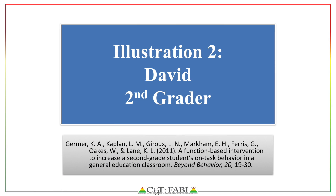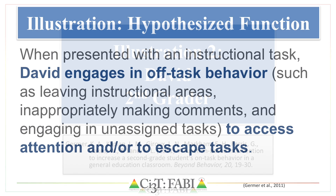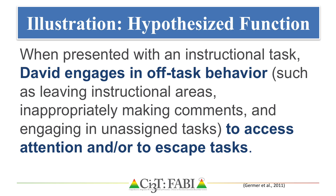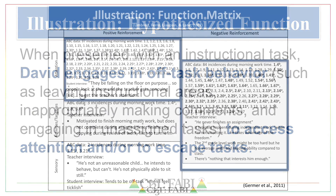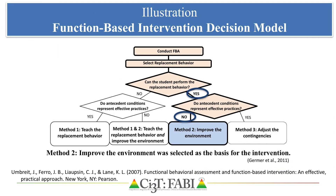The Function-Based Intervention Decision Model provides a systematic method for teams to select a specific method for the functional assessment-based intervention. In this illustration by Germer and colleagues, 2011, results of the functional assessment indicated when presented with an instructional task, David, a second-grade student, engages in off-task behavior to access attention and/or to escape tasks as determined by the function matrix. Using the Function-Based Intervention Decision Model, the team determined the student could perform the replacement behavior and antecedent conditions did not represent effective practices. Method 2, improving the environment, was selected.